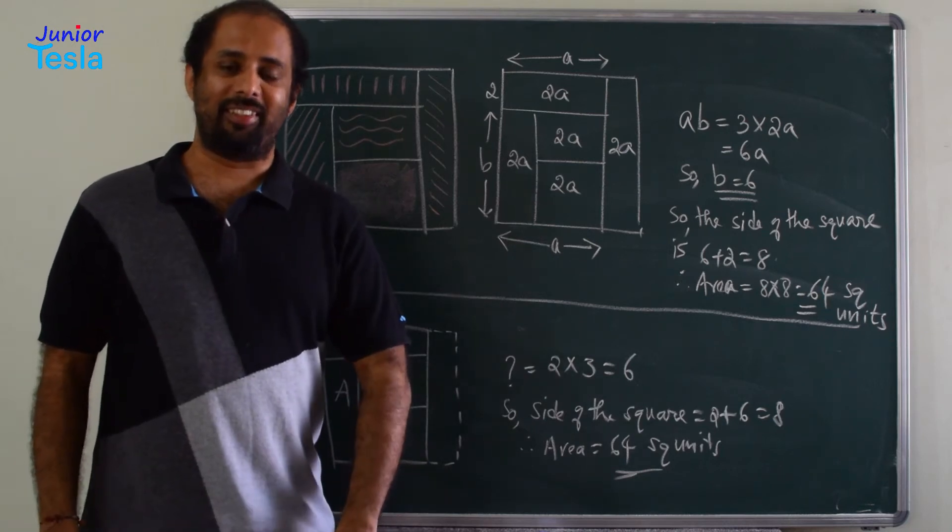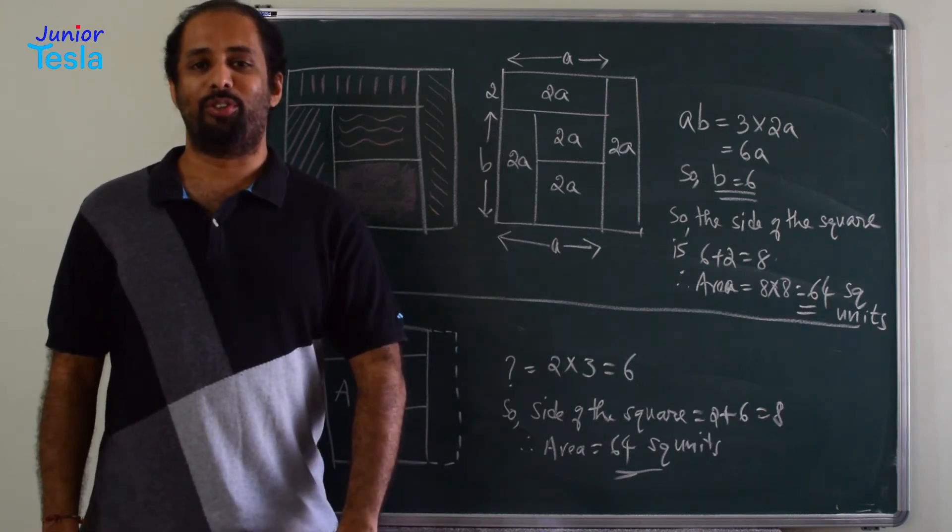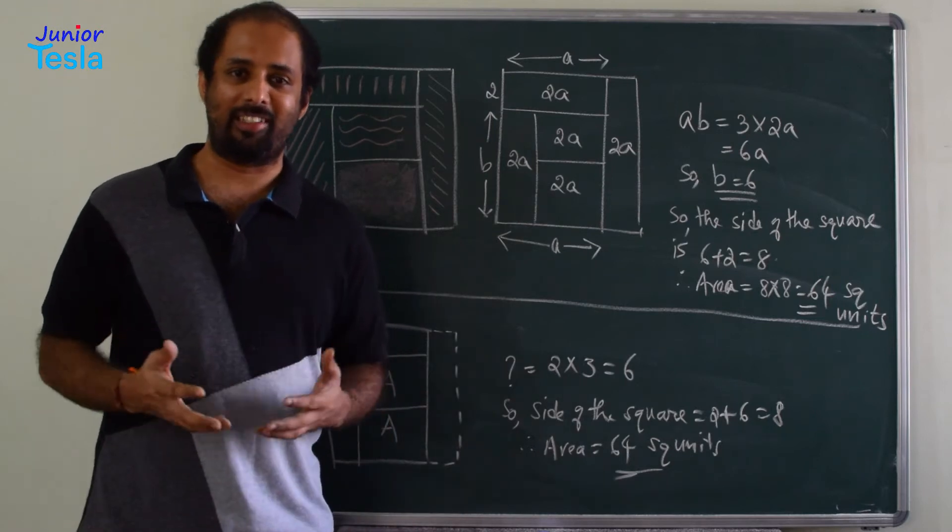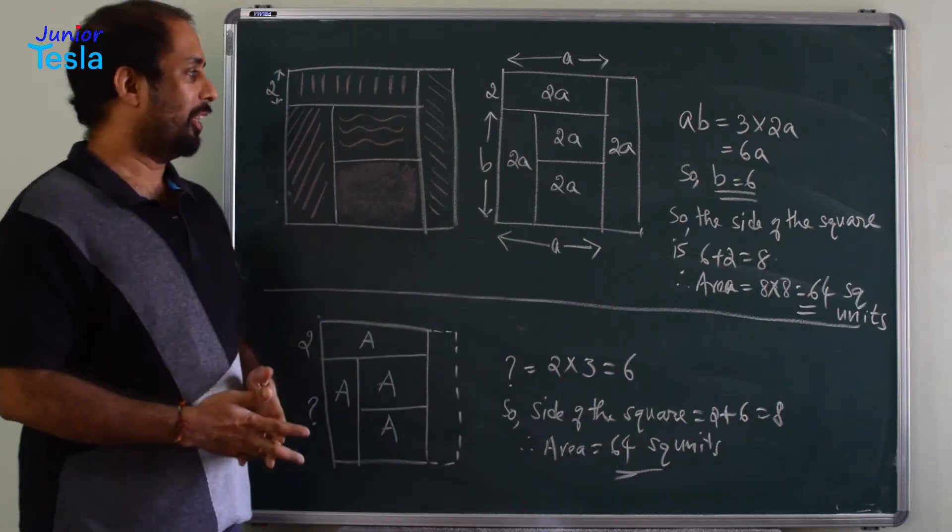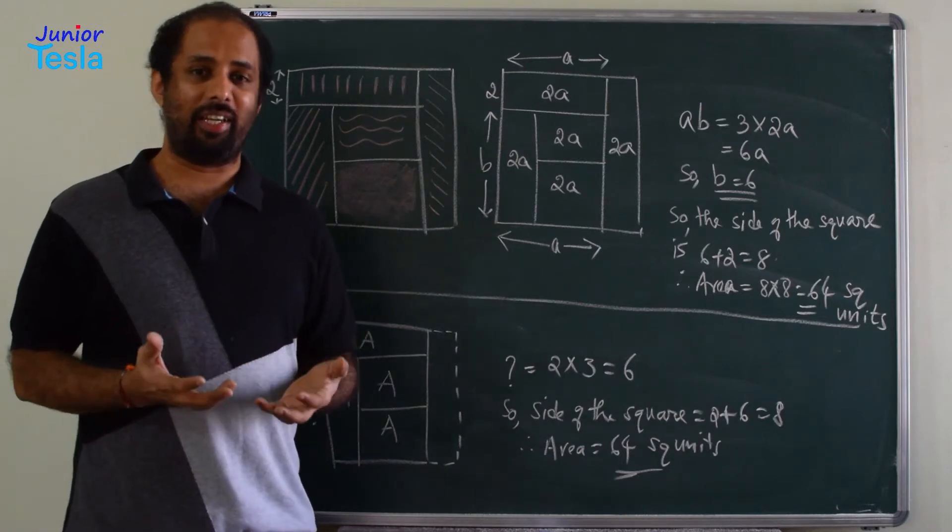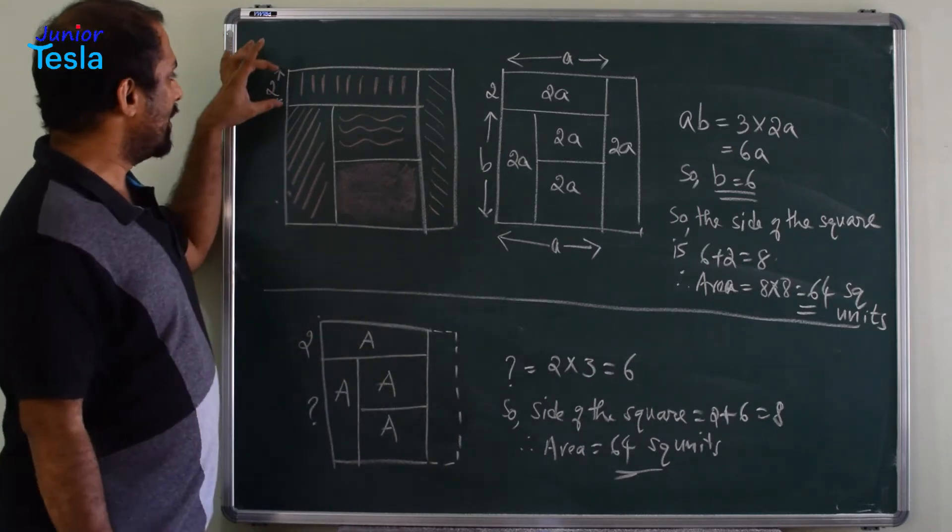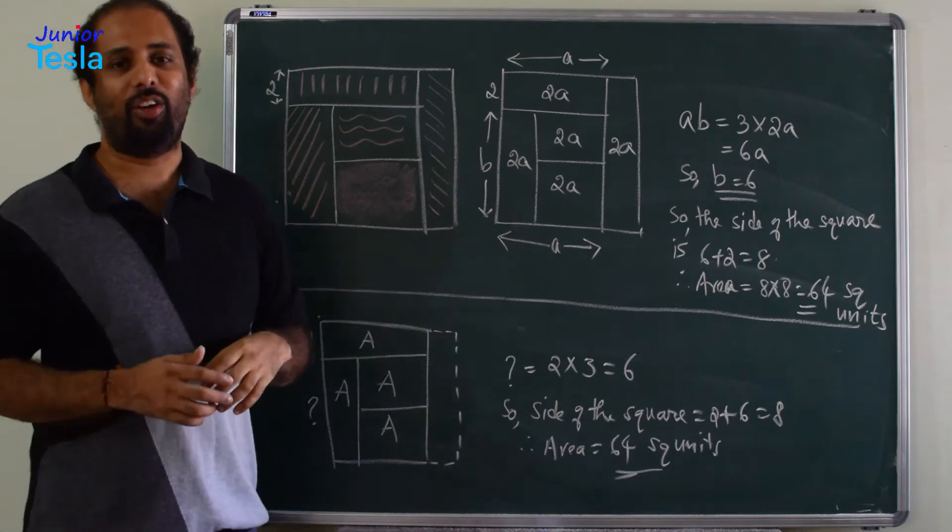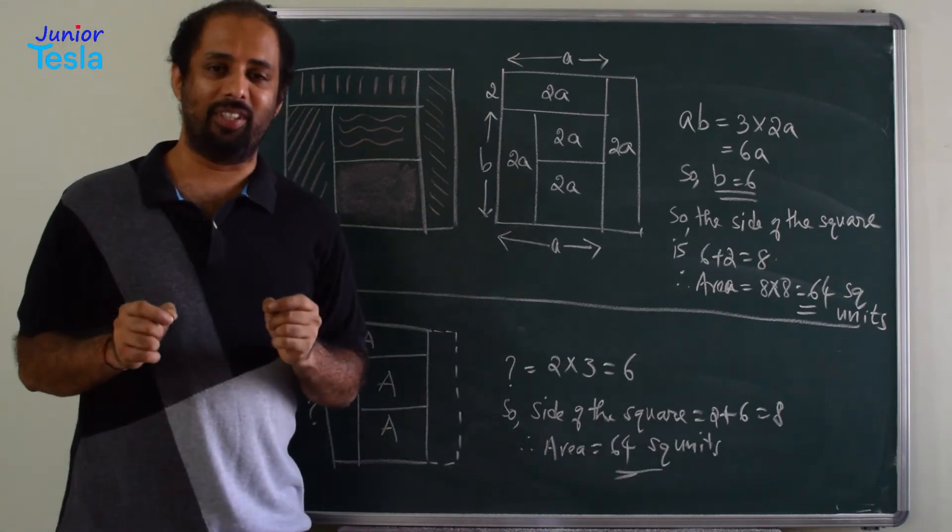Namaste. Welcome to Junior Tesla. In this episode, I am going to show you a problem which we have already discussed in our previous episodes. The problem is here. There is a square which is divided into 5 regions of equal area and this length is given. It is 2 units.